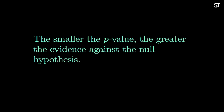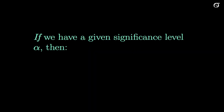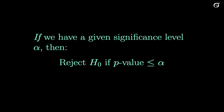This is going to be important for us: the smaller the p-value, the greater the evidence against the null hypothesis. Now, if we have a given significance level alpha, then we can reject the null hypothesis if our p-value is less than or equal to alpha. This can be our cutoff for significance. If our p-value is less than or equal to alpha, we can reject the null at the alpha level of significance, or we can say there is significant evidence against the null hypothesis. If your p-value is greater than alpha, then we do not have significant evidence against the null hypothesis and we cannot reject the null.